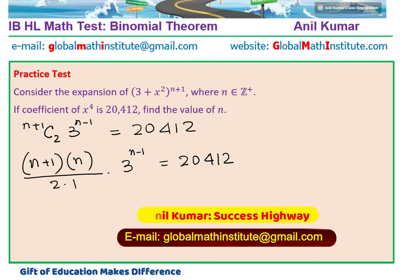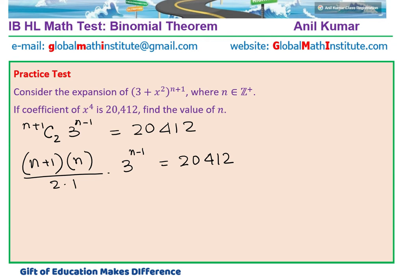Now, let us rearrange. We can multiply 2 on the other side. And here we have (n+1)·n times 3^n divided by 3. That is 3^(n-1) equals to 20,412.